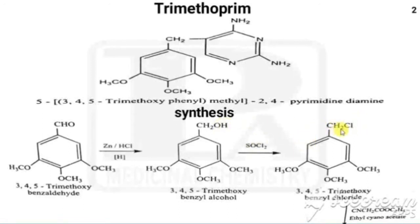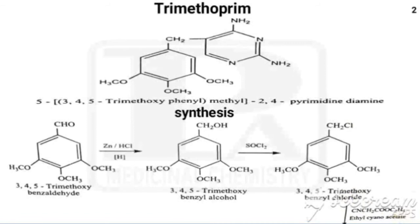With the chloro derivative, ethyl cyanoacetate is added. The Cl combines with CN and is removed, so in the place of Cl, a CH2COOC2H5 group is attached.